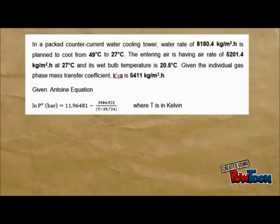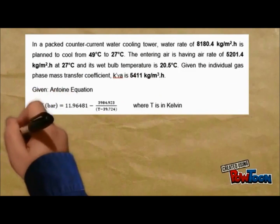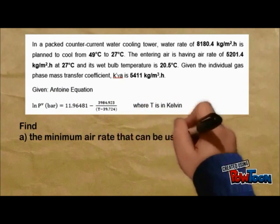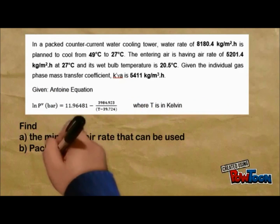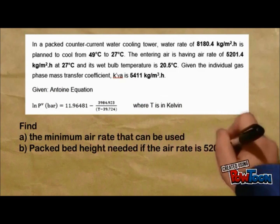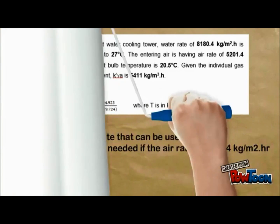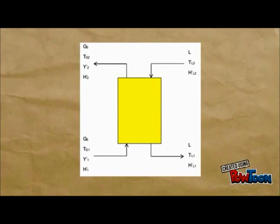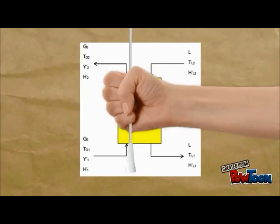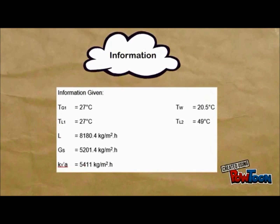From the question, we are required to find the minimum airway that can be used and also the backpack height needed if the airway is 5201.4. The following diagram could be plotted based on the information given from the question above. This information could be extracted from the equation to help us out with the calculation.